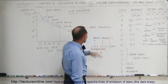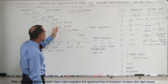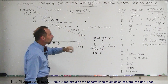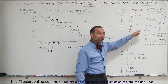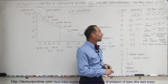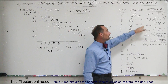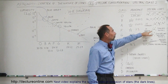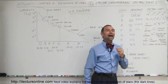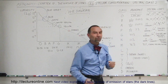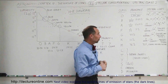The F-class stars are the whitish to yellowish stars, a little bigger and hotter than the Sun. About 3% of all stars fall in that category. The hydrogen lines are somewhat weaker than in A-class stars. We still see ionized calcium, but we also begin to see ionized metals within the spectral lines.